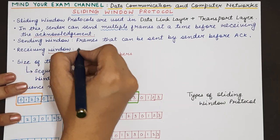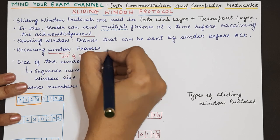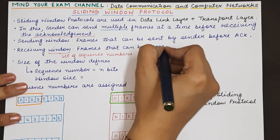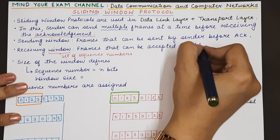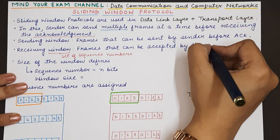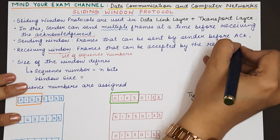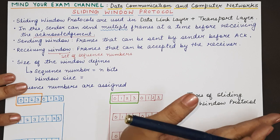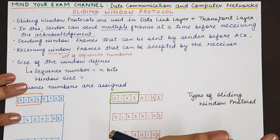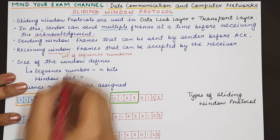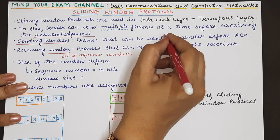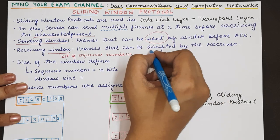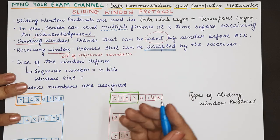The receiving window consists of all those frame numbers that can be accepted by the receiver. If the receiving window contains five different frame numbers, the receiver will only accept one of those frame numbers. If any frame arrives with a sequence number outside those five values, the receiver will directly discard it. The sending window contains the frames the sender is allowed to send, and the receiving window contains the frames the receiver is able to accept.